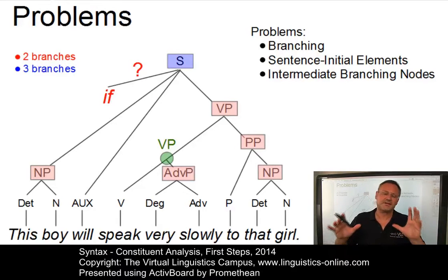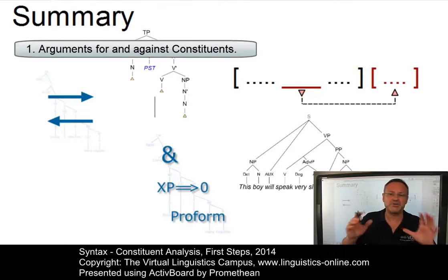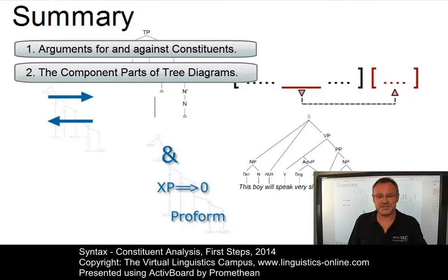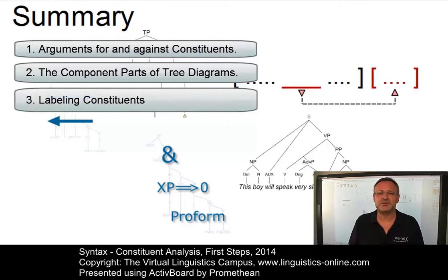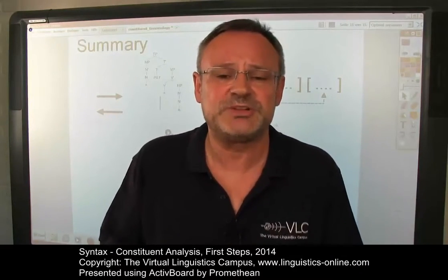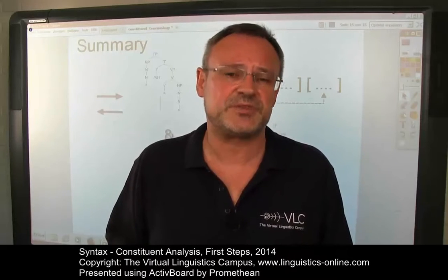For the moment it suffices if you have understood the following — and that's my summary for this e-lecture. It should be clear now how you can argue for or against particular strings of words as constituents. You should know how we address the various parts of a syntactic tree: nodes, branches, mother nodes, daughters, sisters. And you should have a first idea about labeling constituents — noun phrases, adverb phrases, verb phrases, etc. See you again in a follow-up e-lecture about constituent analysis where we will deal with the problem of constituent hierarchies and talk about intermediate phrasal categories. Until then, have a nice time. Bye-bye.